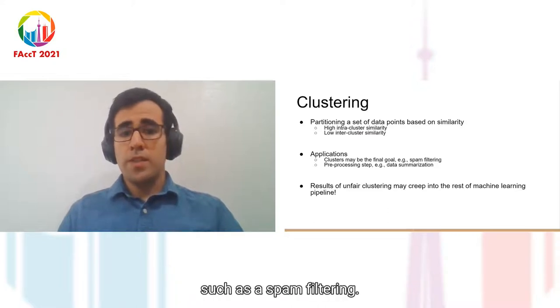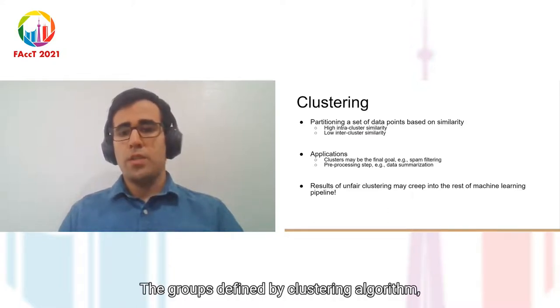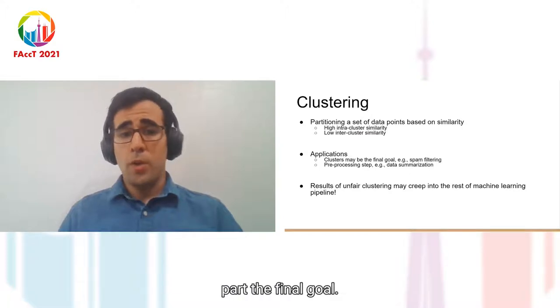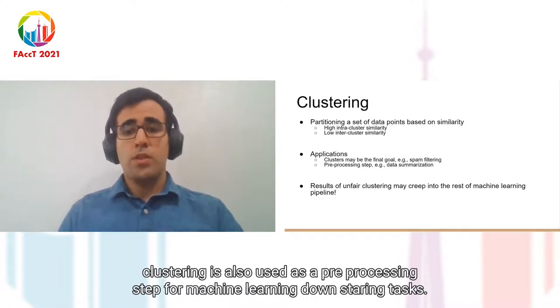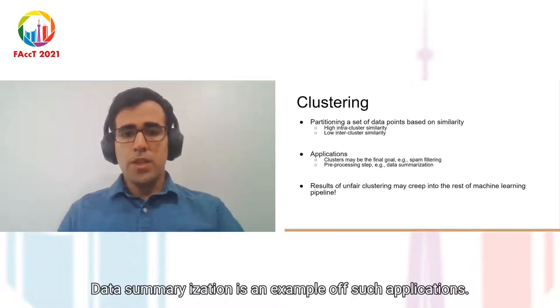In some applications, such as spam filtering, the groups defined by a clustering algorithm are the final goal, but quite often clustering is also used as a preprocessing step for machine learning downstream tasks. Data summarization is an example of such applications.